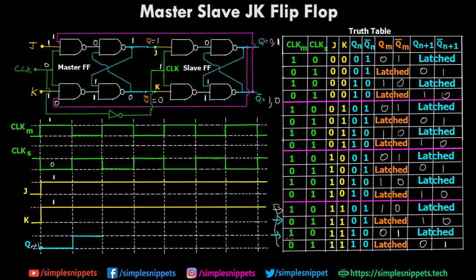In the third case the clock flips again: clock of master becomes 1 and clock of slave becomes 0. The previous state of q(n) is 1, and the next state is also in the latch state, so q(n+1) continues to stay at 1. In the fourth case the clock flips once more: clock of master goes 0 and clock of slave becomes 1. The previous state of q(n) is 1, but the next state q(n+1) becomes 0. This toggling happens every time these four states cycle.